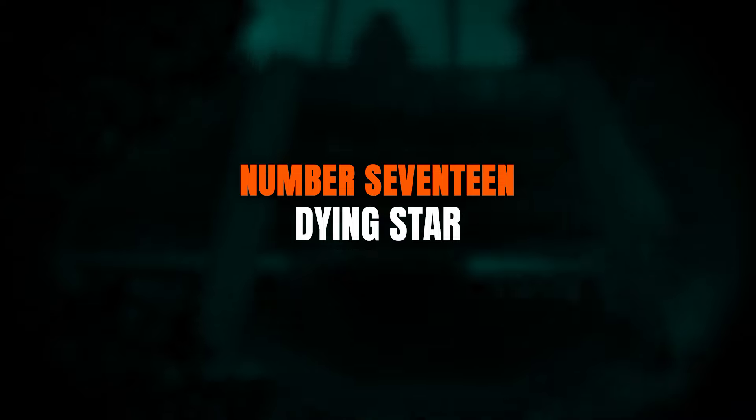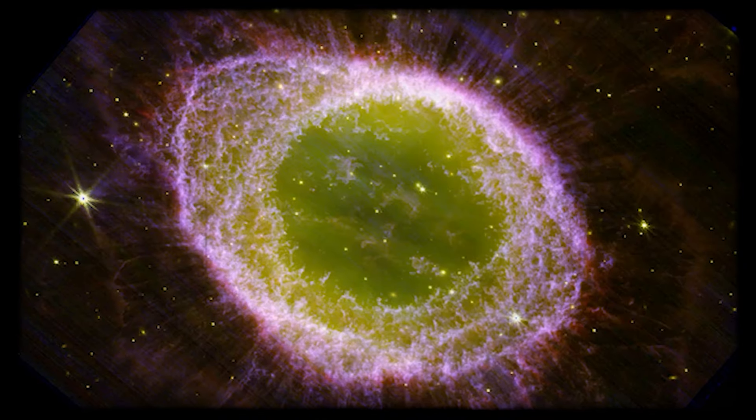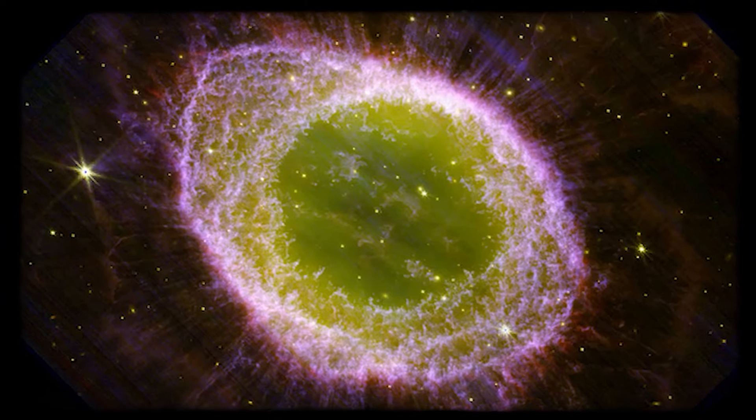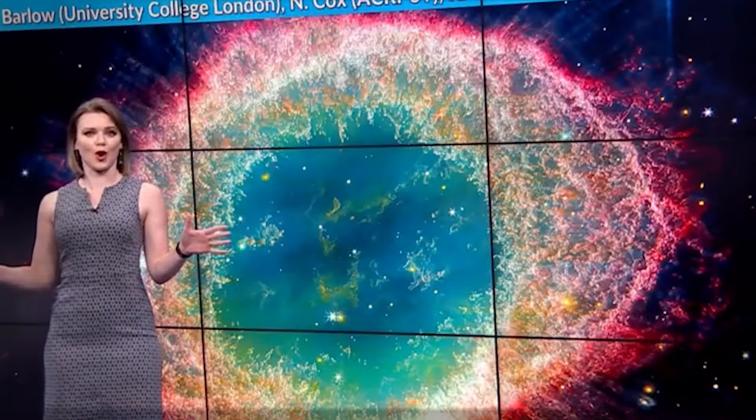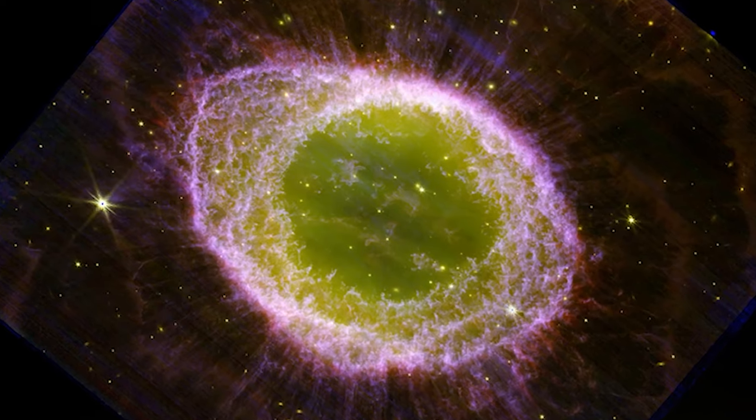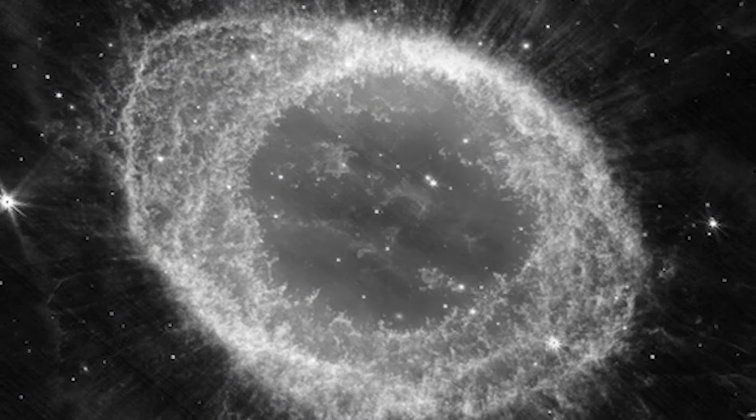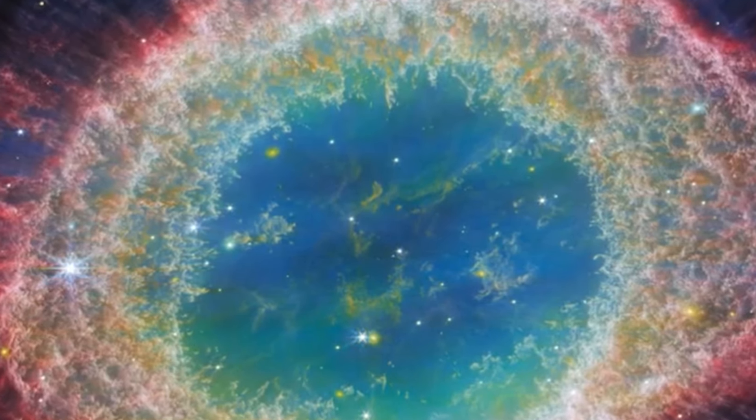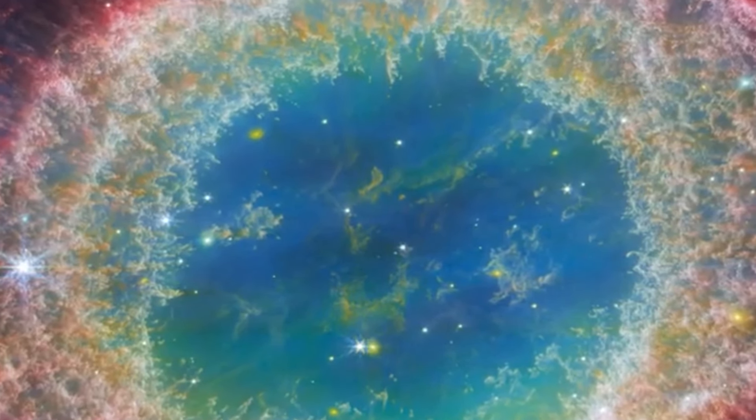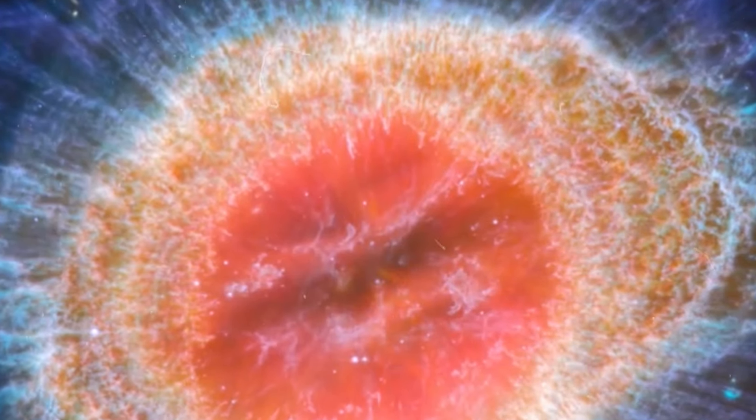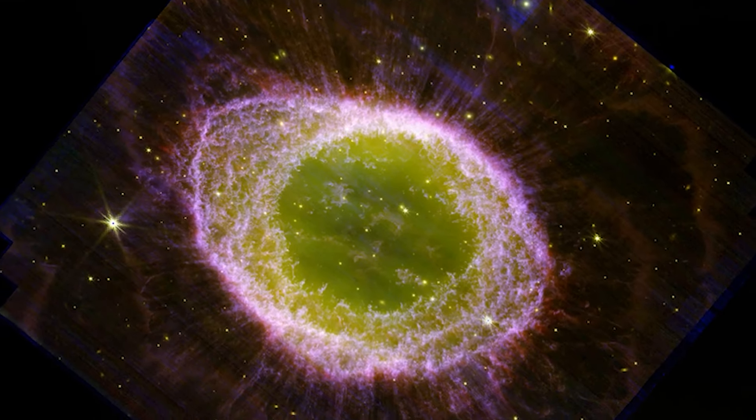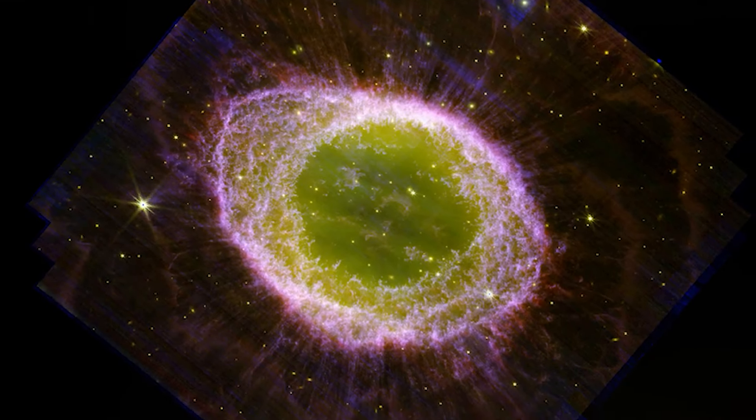Number 17. Dying Star. Thanks to the JWST, we now have a stunning preview of what our own solar system might look like in its final moments. Webb was able to capture a breathtaking image of the Ring Nebula. Located 2,200 light-years away, this donut-shaped nebula is the stunning aftermath of a dying star's explosion. At the center of the ring, nebula lies a tiny white dwarf, the remnants of the star's core. This pinprick of light is all that remains after the star hurled its outer layers into space, creating a magnificent, eye-shaped spectacle. This celestial event gives us a glimpse into the distant future of our own solar system.